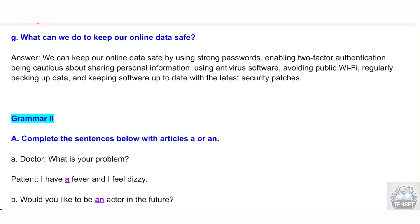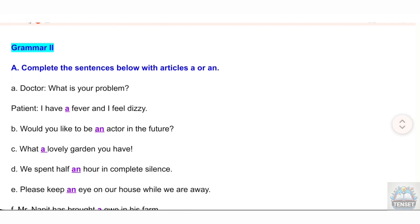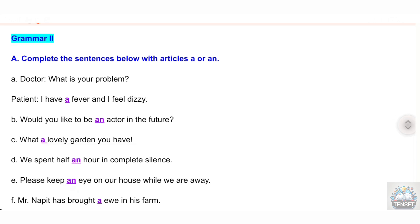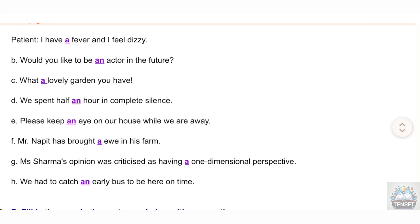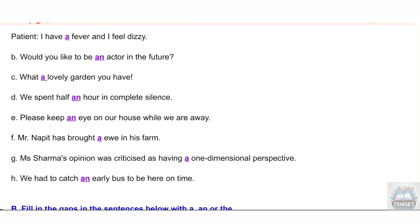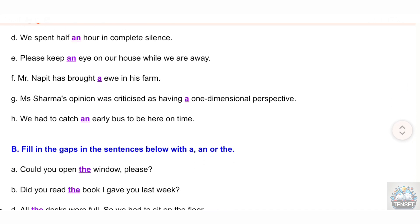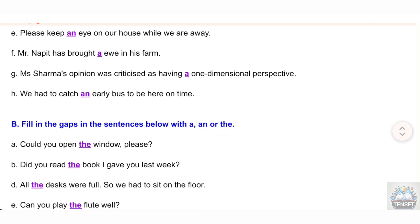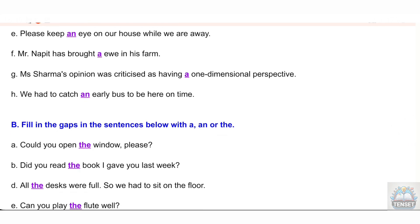Grammar Section 2A: Complete the sentences below with articles. A — Doctor: What is your problem? Patient: I have a fever and I feel dizzy. B — Would you like to be an actor in the future? C — What a lovely garden you have! D — We spent half an hour in complete silence. E — Please keep an eye on our house while we are away. F — Mr. Knappett has brought a 'U' in his farm. G — Ms. Sharma's opinion was criticized as having a one-dimensional perspective. H — We had to catch an early bus to be here on time.